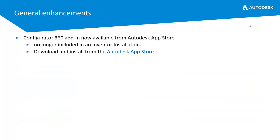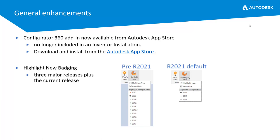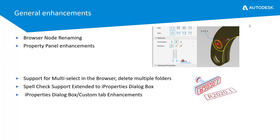A few other general enhancements: the Configurator 360 add-in is only available from the App Store now — it's no longer included in the Inventor installation with 2021. There are changes to badging; in previous releases every point release was shown, now only three major releases plus the current release are available. Several enhancements were made in the 2020.1 release: browser node renaming, property panel enhancements with interaction between model panel and property panel, support for multi-selecting in the browser, and — a personal favorite — the ability to use the spell checker in iProperties.